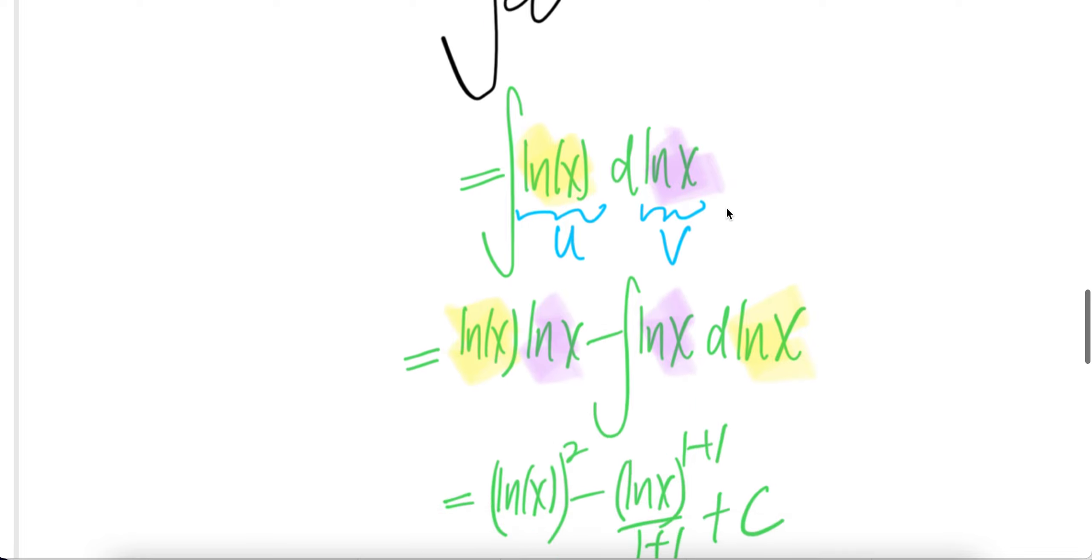Now we are going to use another way by treating this as u and then this is v, integral of u dv. Applying the ibp or integration by parts, you get u v minus integral of v du.